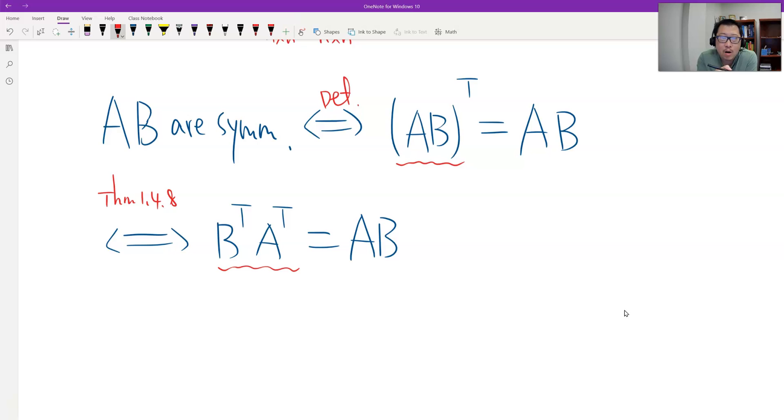So now because B and A are symmetric, see? And this is equivalent to B times A equals A times B. This equals this. The transpose of B is B. The transpose of A is A because the condition.